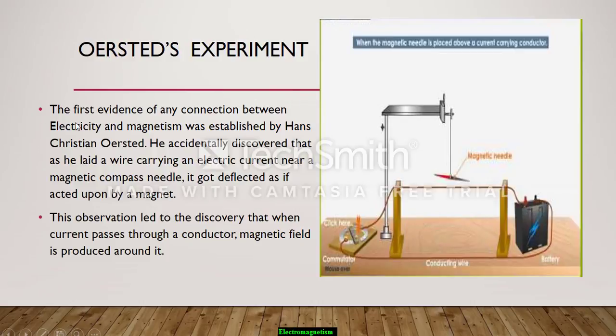What is Oersted's experiment? The first evidence of any connection between electricity and magnetism was established by Hans Christian Oersted. He accidentally discovered that as he laid a wire carrying an electric current near a magnetic compass needle, it got deflected.